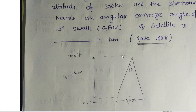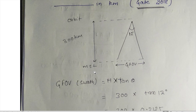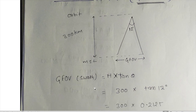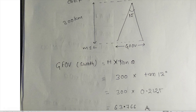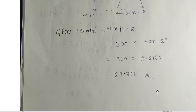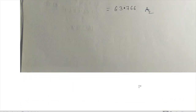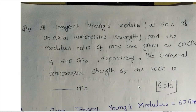The sensor makes a coverage of some distance that we have to find. The angle of the swath is 12 degrees and the satellite is at 300 kilometers, meaning it's a polar orbiting satellite. The formula for GFOV is h × tan(theta), where h is 300 km and theta is 12 degrees. The tan of 12 degrees is 0.2125, so multiplying gives the answer: 63.76 kilometers.